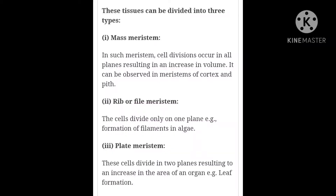Now, classification of Meristematic Tissue based on plane of division. Ismein teen hote hai: Mass Meristem, Rib or File Meristem, and Plate Meristem. In Mass Meristem, cell division occurs in all planes resulting in an increase in volume; it can be observed in the meristem of cortex and pith. In Rib Meristem, cells divide in one plane — example is formation of files. In Plate Meristem, cells divide in two planes resulting in an increase in the area of an organ — example is leaf formation.